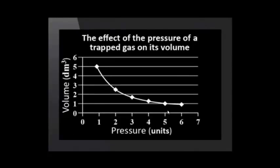If we plot pressure and volume against one another, we get a curved line, a hyperbola. This is a characteristic of inverse proportion.